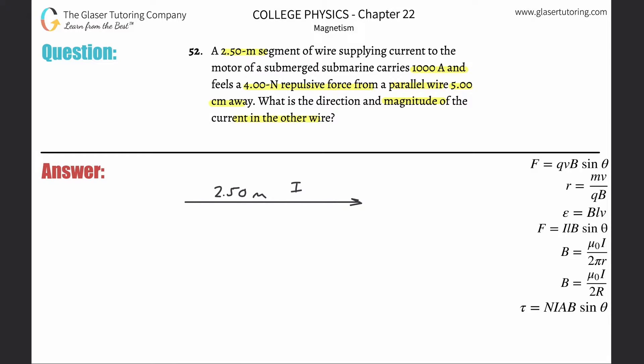They told you the current here, the I, is going to be 1000 amps in this thing, and it feels a repulsive force. So let's just point it upwards for now and you'll see why in a second. So here's the force, and it tells you the force here is going to be 4 newtons.